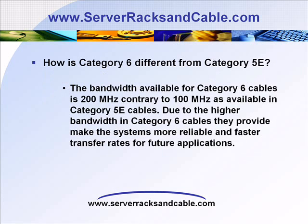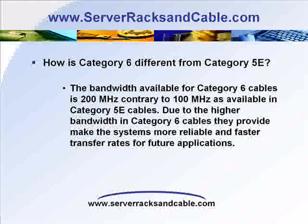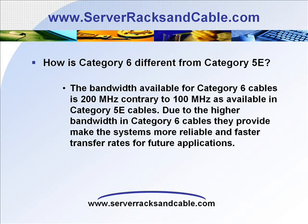Now how is Category 6 different from Category 5E? Category 6 cables have better communication performance and higher bandwidth than Category 5E cables. The bandwidth available for Category 6 cables is 200 MHz, contrary to 100 MHz as available in Category 5E cables. Also including near-end crosstalk (NEXT), improved net insertion loss, return loss, and equal-level far-end crosstalk. Category 6 cables also reduce the noise in the signal, and therefore have an elevated signal-to-noise ratio.